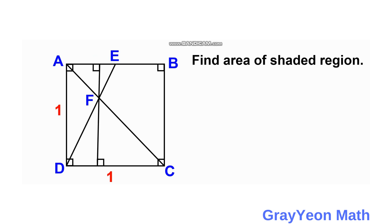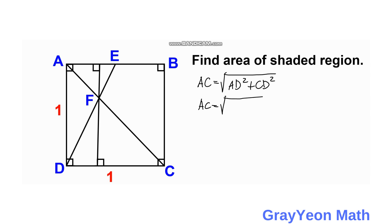First, we need to calculate the length of AC. AC is equal to the square root of AD squared plus CD squared. Since the side length is 1, AC is equal to the square root of 2.